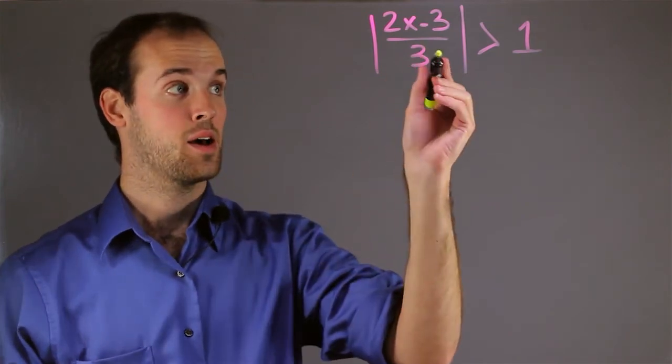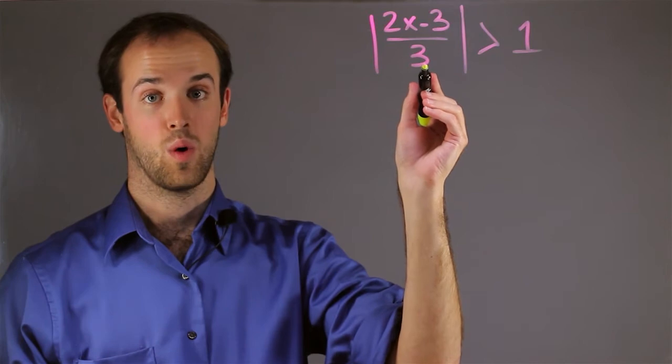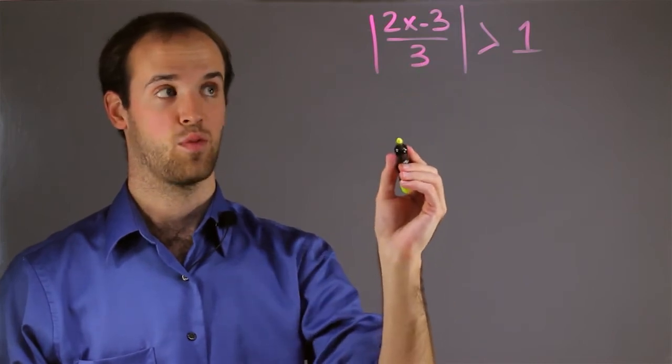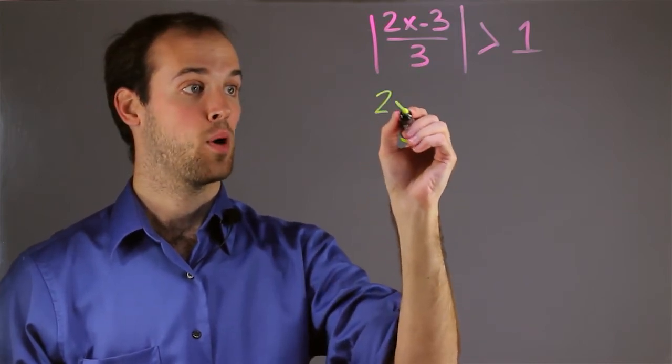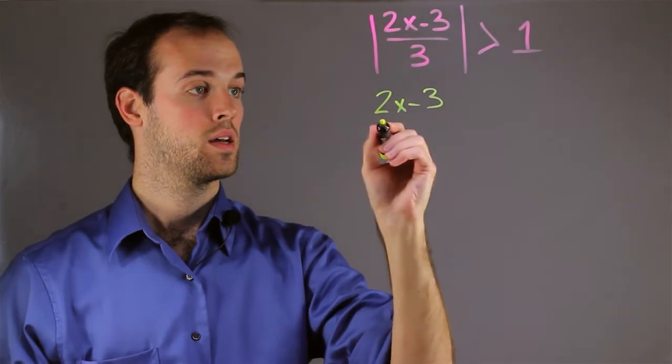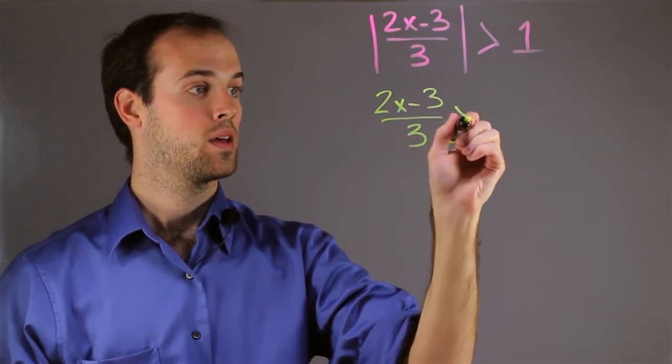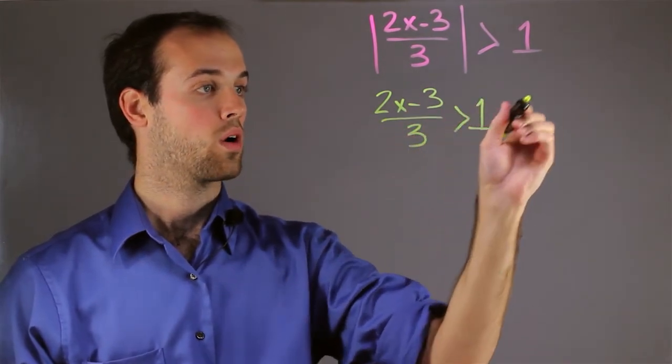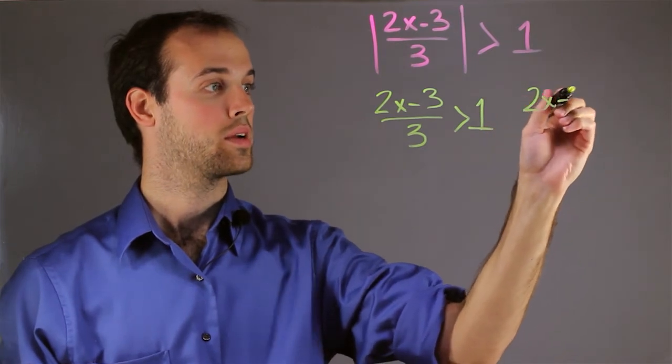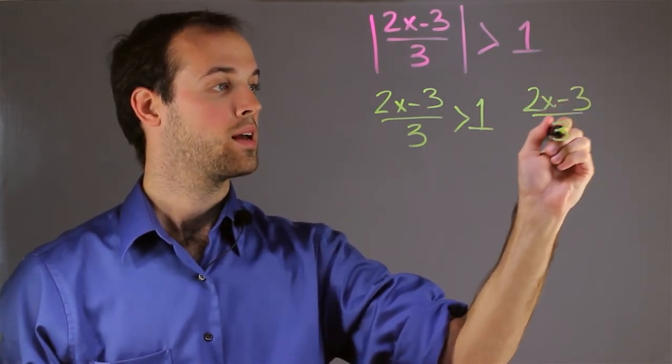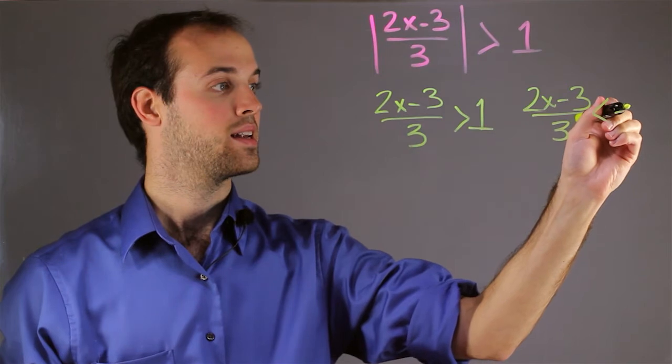Which means that this must be either greater than 1 or less than negative 1. So I'm going to set up both scenarios: 2x minus 3 over 3 is greater than 1, or 2x minus 3 over 3 is less than negative 1.